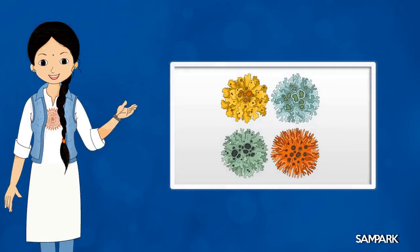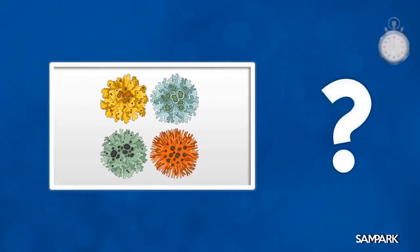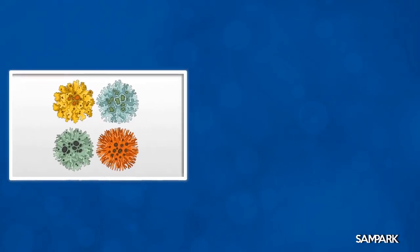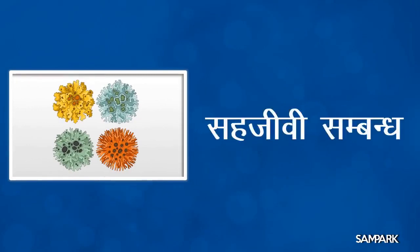बच्चों, इस चित्र में कवक और शैवाल को एक साथ रहते हुए दिखाया गया है। जब दो जीव इस तरह एक दूसरे के साथ रहते हुए अपना आवास और पोषक एक दूसरे के साथ बाँटते हैं, तो वो स्थिति क्या कहलाती है बच्चों? उसे सहजीवी संबंध कहते हैं।